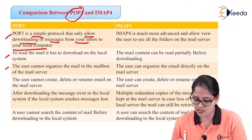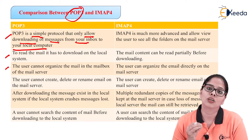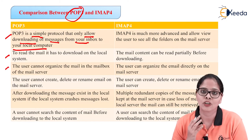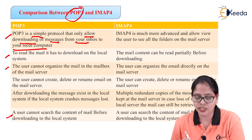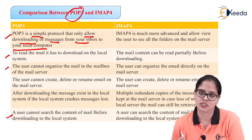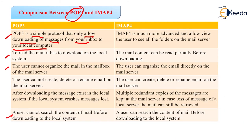After downloading in POP3, the message exists only in the local system — if the local system crashes, the message is lost. That copy is on your local computer only and once deleted you cannot get it back. But in IMAP4, multiple redundant copies of messages are kept at the mail server, so in case of local loss the mail can still be retrieved. POP3 does not allow searching the content of mail before downloading, while IMAP4 allows a user to search the content before downloading.